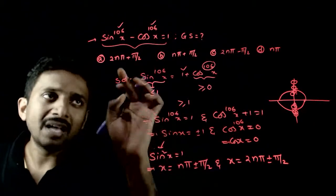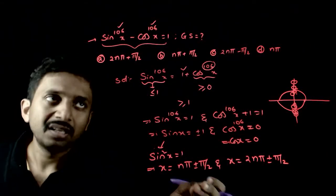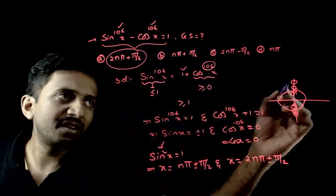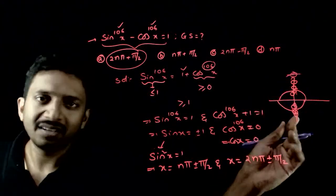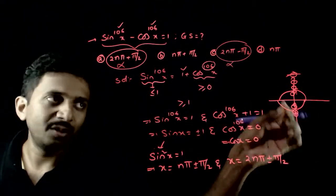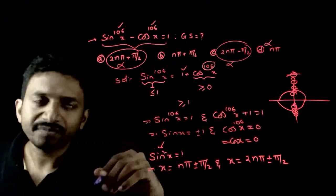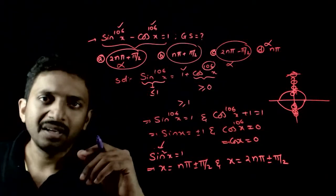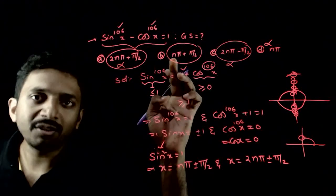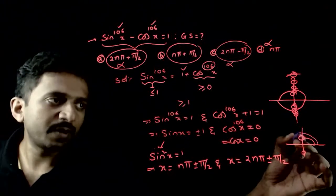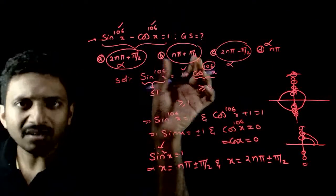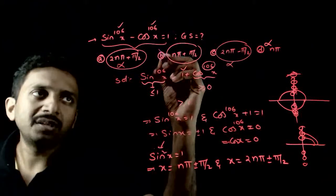Now, looking at the options: 2nπ + π/2 is wrong because it gives only the upward position, not both. 2nπ − π/2 is also wrong — it gives only one position. nπ is also wrong. But nπ + π/2: putting n=0 gives π/2 (upward position); n=1 gives π + π/2 (downward position); n=2 gives 2π + π/2 (upward again) — all positions are being covered alternately. So, option B, x = nπ + π/2, is the right answer.